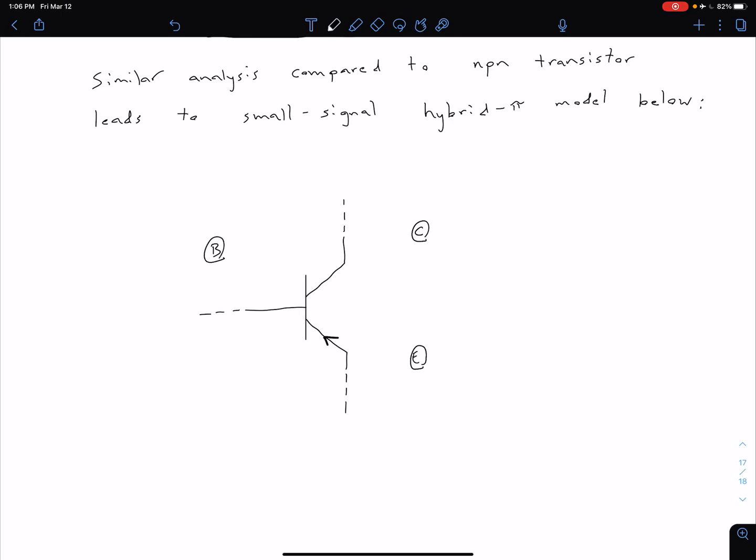So our emitter current is now going into the device. We now have some small signal emitter current I sub E, which is flowing in. We have our base current and collector currents, which are flowing out. So we have IB and IC like this.